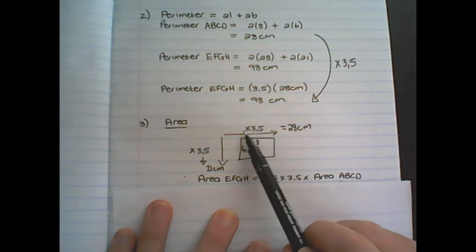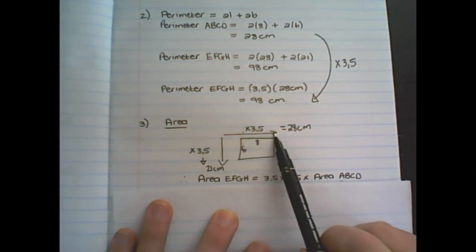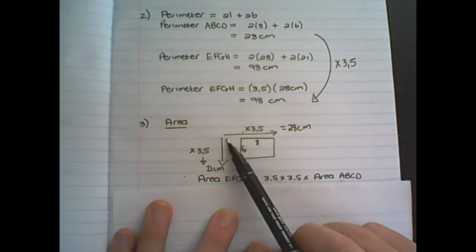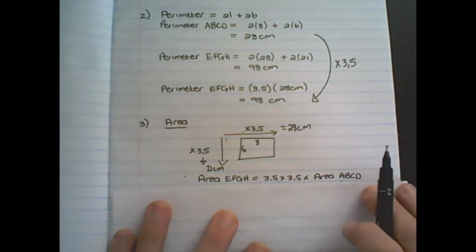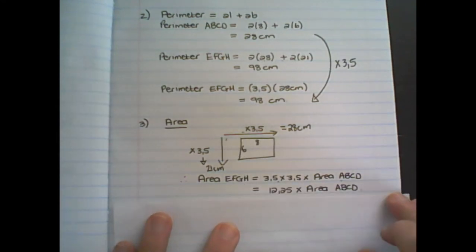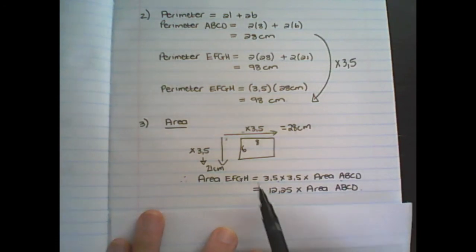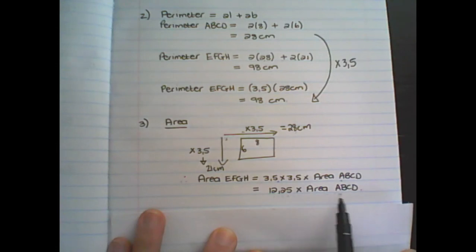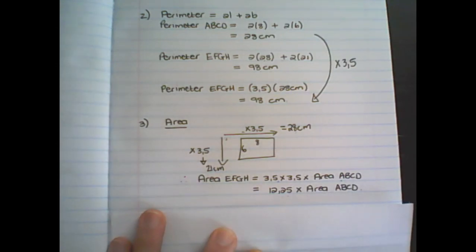Because I increased the length by 3.5 and I increased the breadth by 3.5 times, the area of EFGH is 12.25 times bigger than the area of the original diagram.